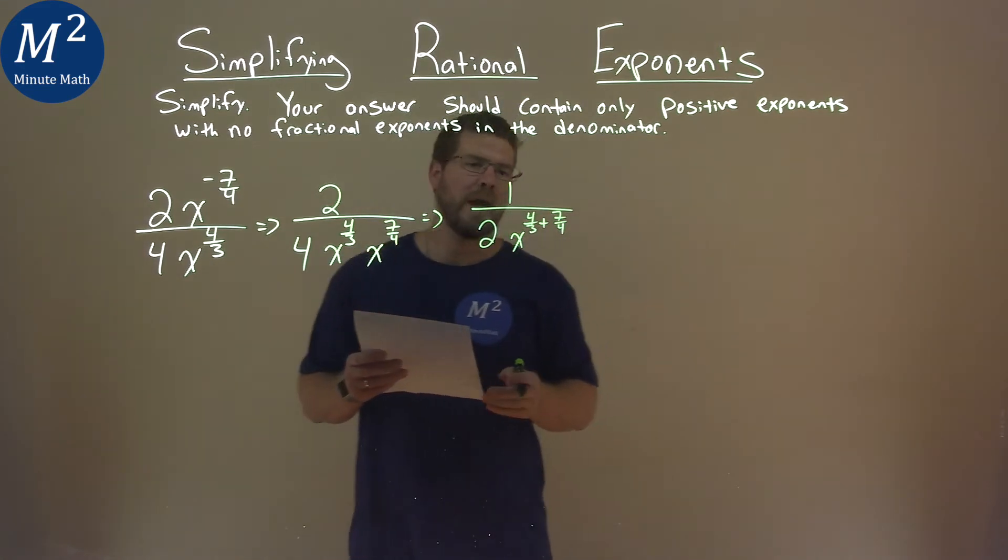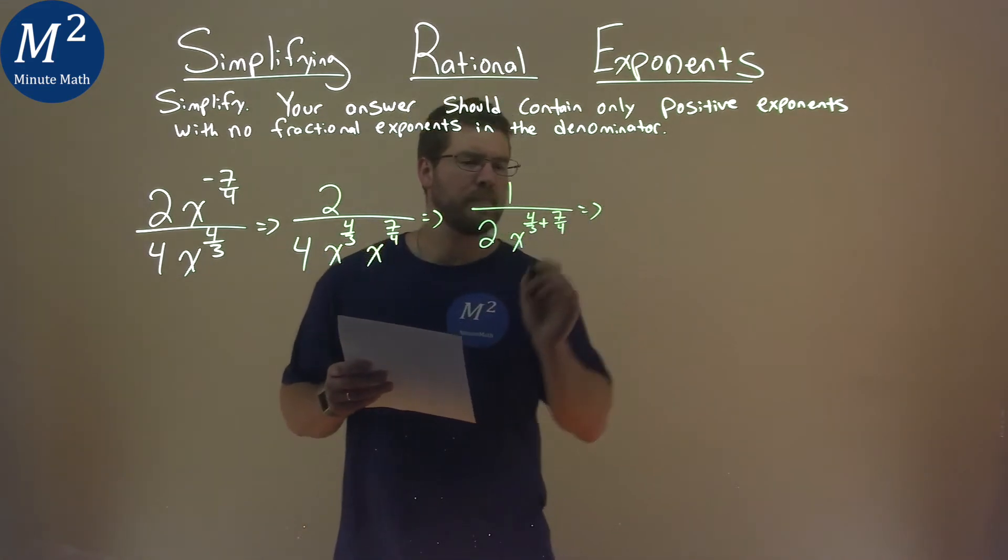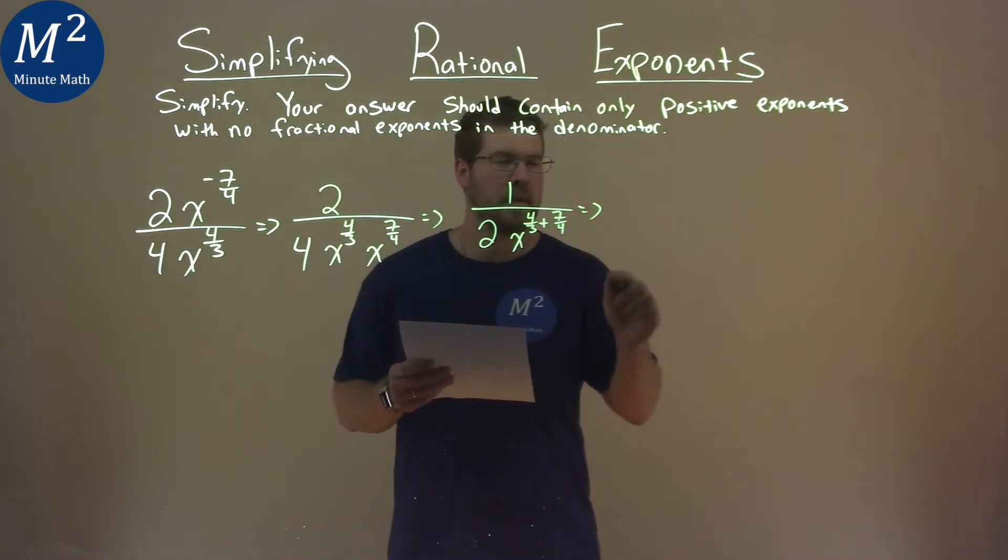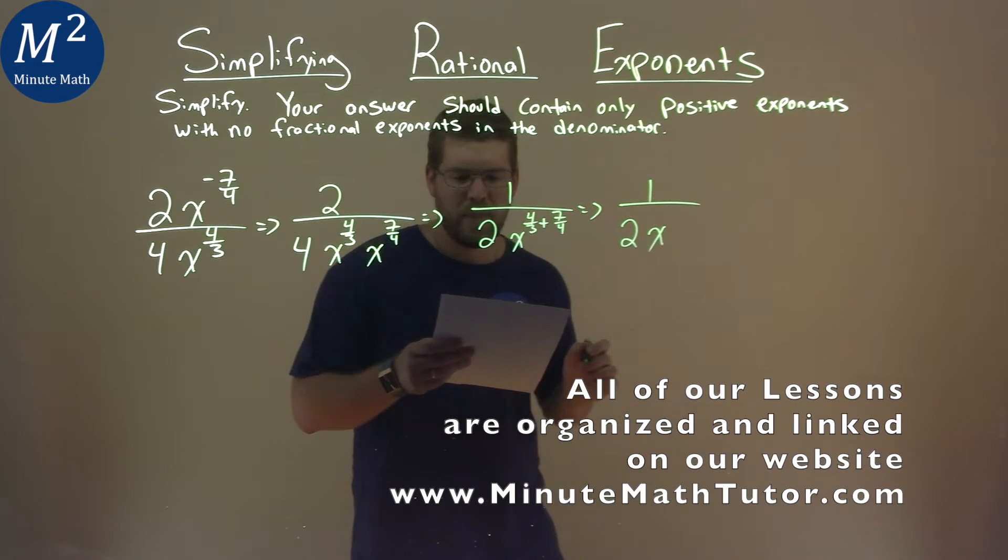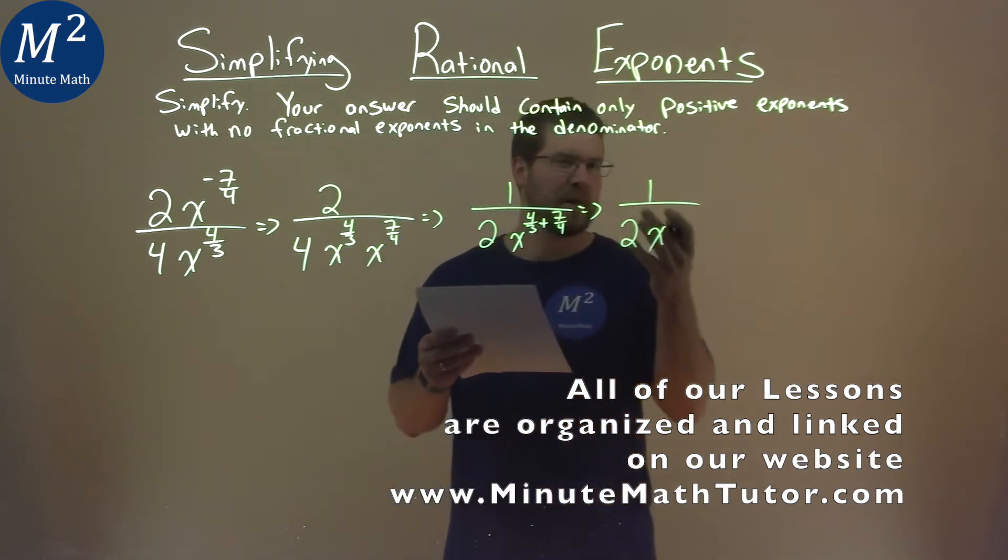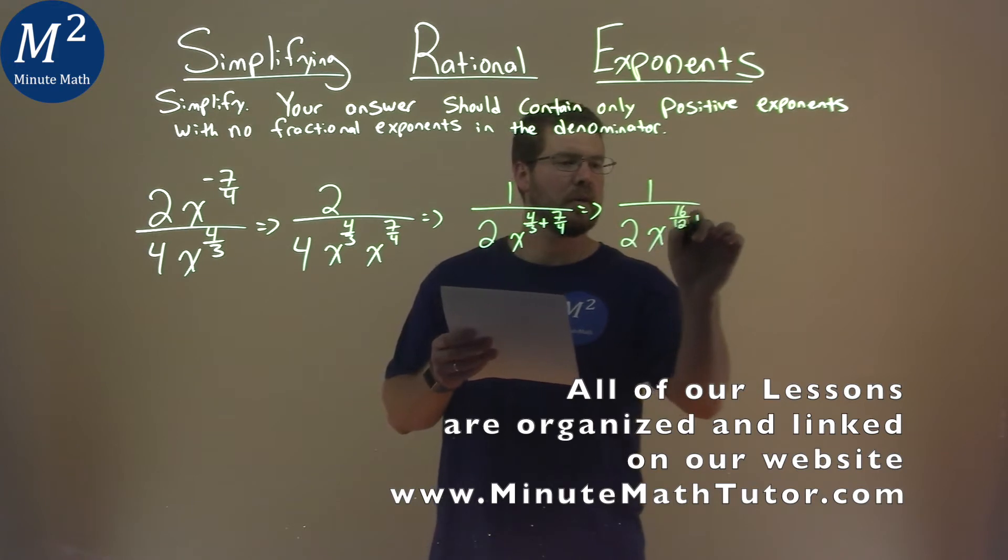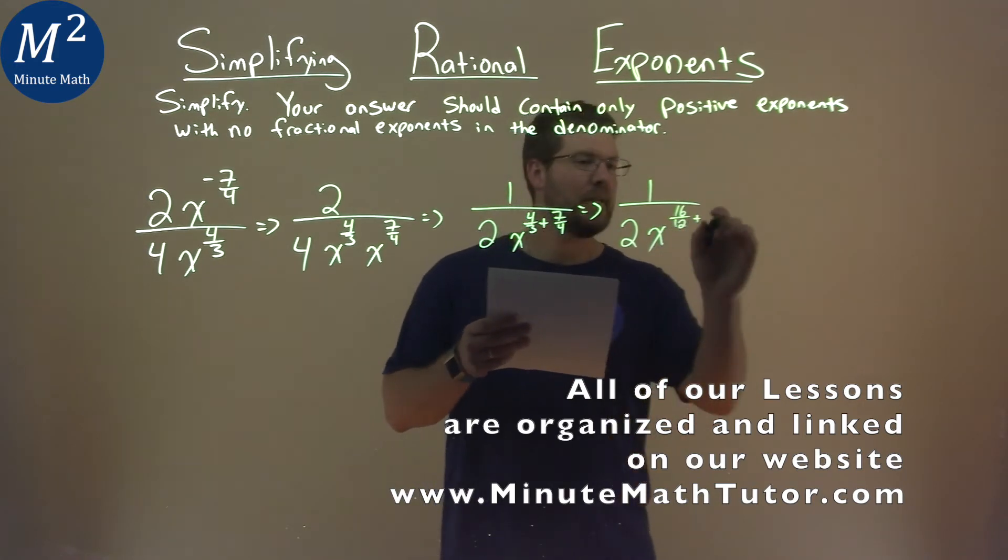Well, when we're adding our exponents here, we make sure we have the same common denominator. So we have 1 over 2x, and they both can be multiplied to have a 12 in the denominator. So 4 thirds is the same as 16 twelfths, and 7 fourths is the same as 21 twelfths.